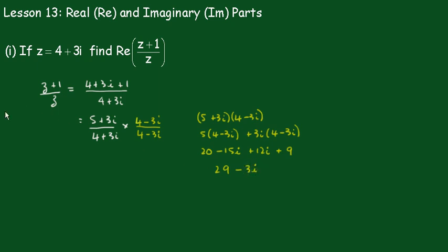The bottom part, 4 plus 3i times 4 minus 3i, is simply 16 plus 9, which is 25.